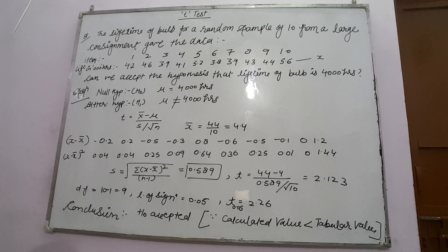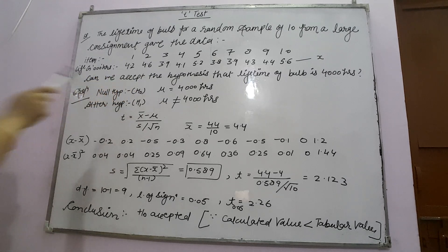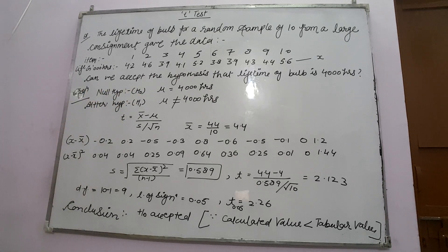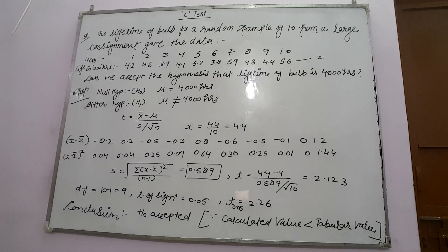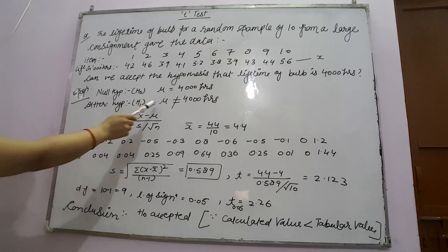First of all, we take the null hypothesis. The null hypothesis is what we want to test — we have to check whether the lifetime of the bulb is 4000 hours. So we take the null hypothesis that mu is equal to 4000. The alternative hypothesis is the opposite: the lifetime of the bulb is not equal to 4000 hours.